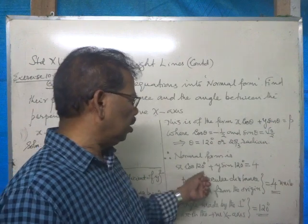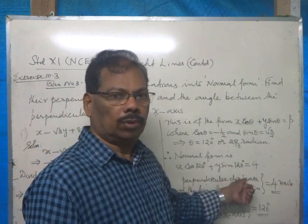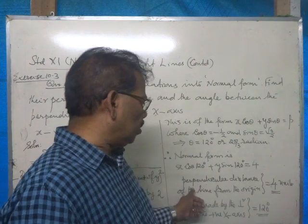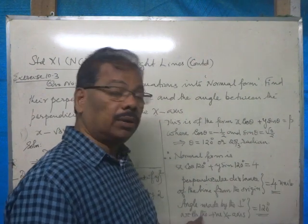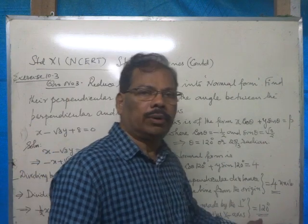So, we can write x cos theta plus y sin theta equals 4. Now, perpendicular distance of the line from the origin is 4 units and the required angle theta is 120 degrees.